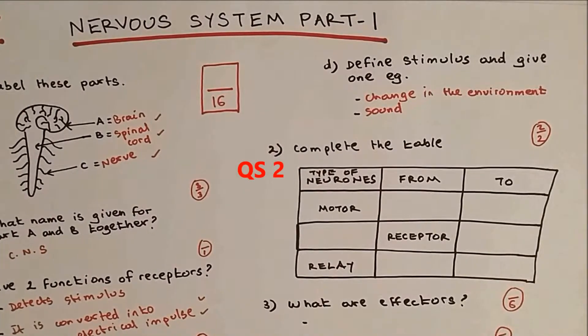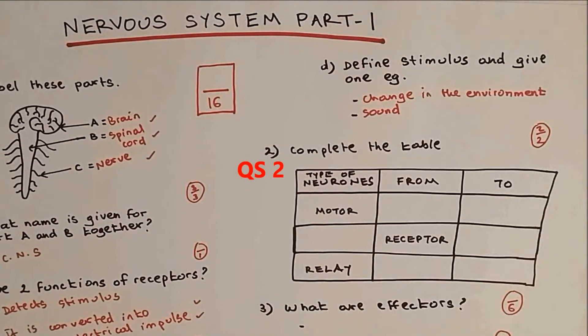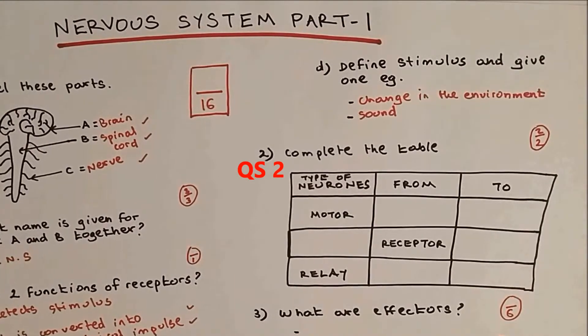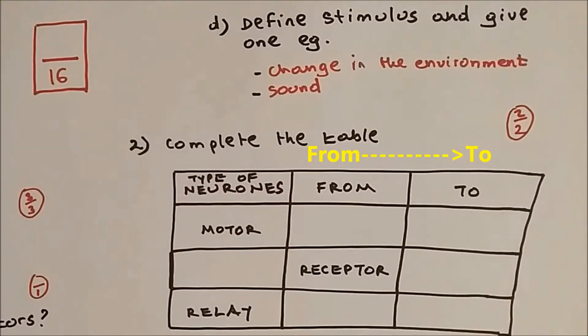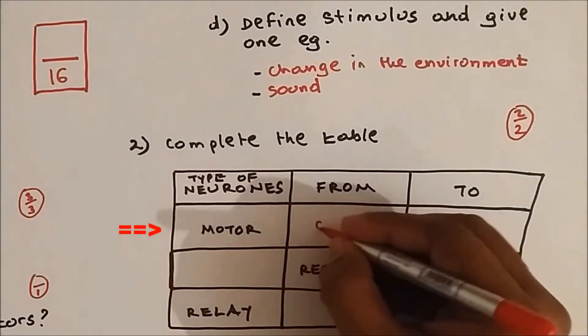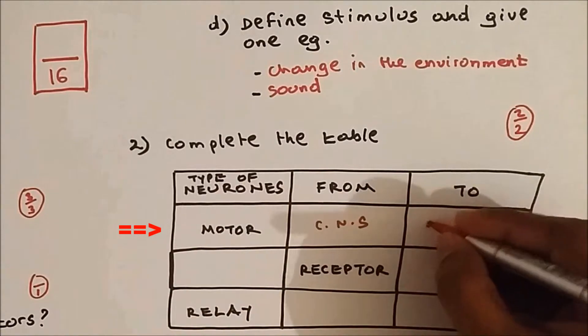Question number two: complete the table. In this table we have three types of neuron which are sensory, motor, and relay. This is the electrical impulse traveling from and to. The motor neuron carries electrical impulse from the central nervous system to the effectors.